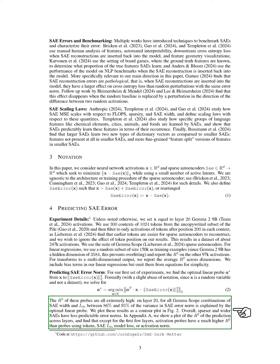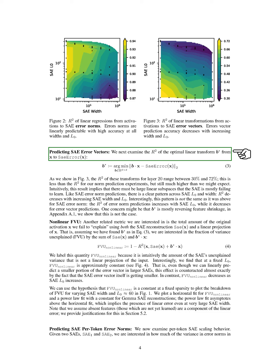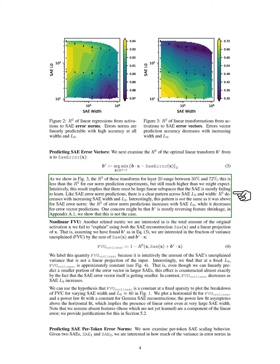In further analysis, we show that activation probes yield significantly higher R-squared values compared to those using tokens, sparsity level, model loss, or activation norm, except for the initial layers. We then analyze the R-squared values for the optimal linear transformation from the activations to the SAE error. The R-squared values for layer 20 range from 30% to 72%, which is lower than those for norm predictions but still higher than expected, suggesting substantial linear subspaces that the SAE struggles to learn. As the width and sparsity level of the SAE increase, the R-squared values decrease for error vector predictions, contrasting with the increasing trends seen in error norm predictions.